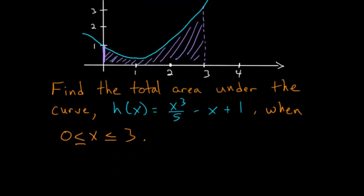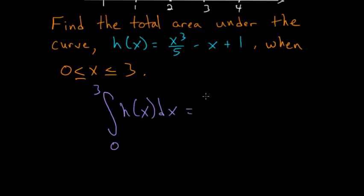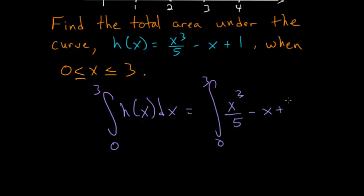So let's do that. We need to take an integral from 0 to 3 of h(x) with respect to x. So we have the integral of x³/5 − x + 1 with respect to x. For this, we'll use the power rule for integrals.